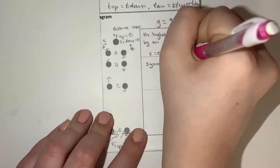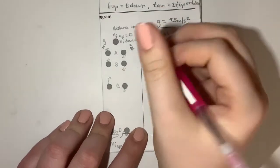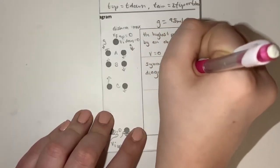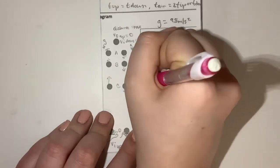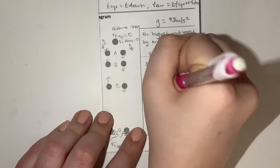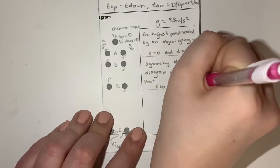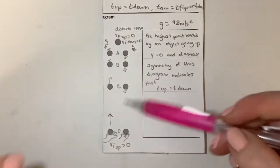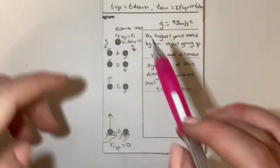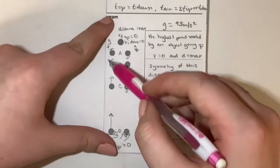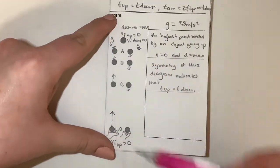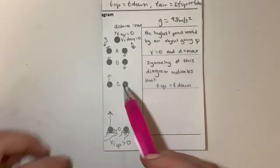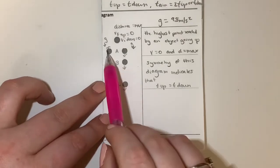The symmetry of this diagram indicates that time up equals time down. This means the time the balls take to go up is equal to the time they take to come down. A, B, C, and D are all equal intervals. Once the ball falls back into the hands, it equals zero again — these times are all equal.